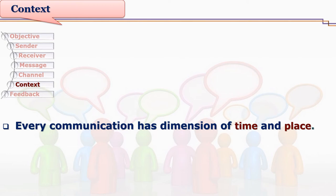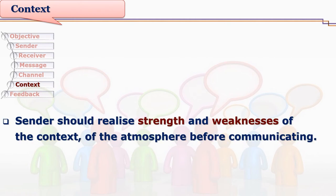Every communication has a dimension of time and place. Any communication starts at some time and ends at some time, so we can say during which period and for how much time a particular communication took place. There is always a context of place — where communication took place can be answered by analyzing the process. Even with social media, we can say this particular communication happened on Facebook, through Hangout, or through WhatsApp — we can talk about its context.